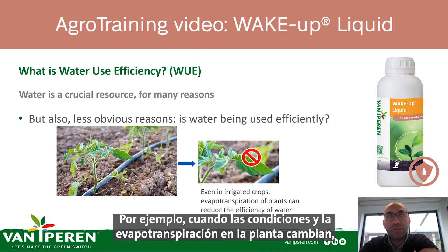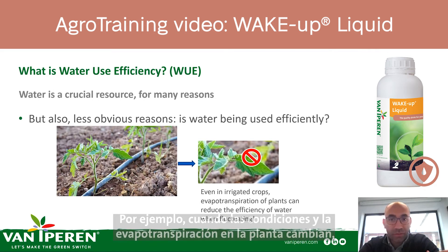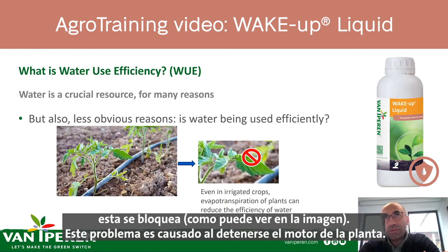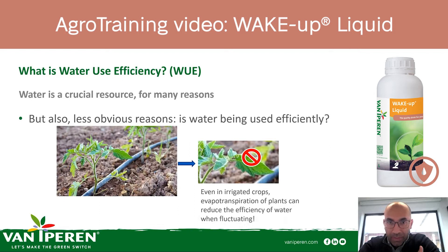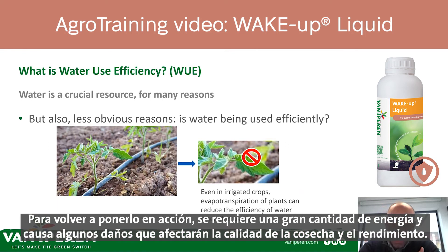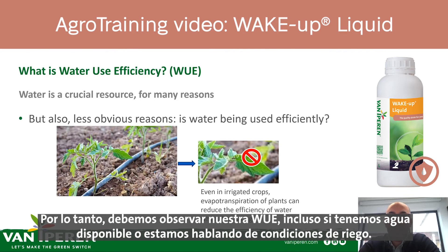For example, when you switch conditions and the evapotranspiration in the plant gets blocked, as you can see in the picture, you have a problem because the engine of the plant has stopped. To put it back in action, it requires a huge amount of energy and does some damage that will take its toll on the quality of the crop and the yield. So even if we have water and even in irrigated conditions, we still need to look at our water use efficiency — beyond availability.